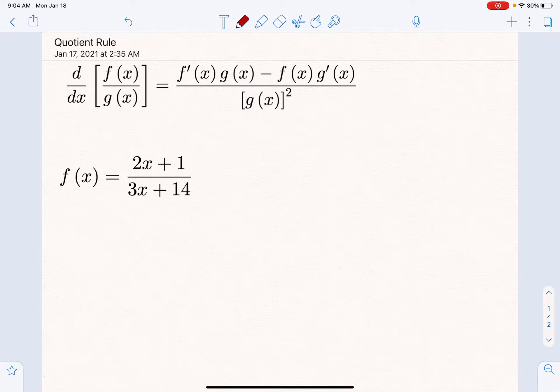In this video, we're going to look at the quotient rule. This is a rule for finding the derivative when you have a function in the numerator and a function in the denominator. It's very similar to the product rule, but a little bit different.